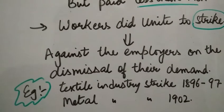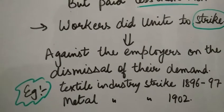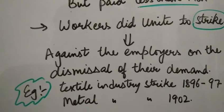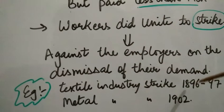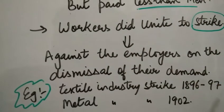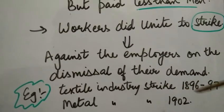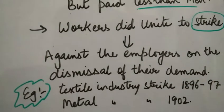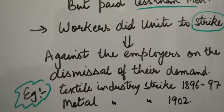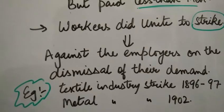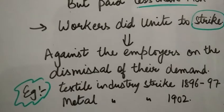Examples of major strikes in Russian society include the textile industry strike of 1896–97 and the metal industry strike of 1902. Whenever the need arose, workers came together to stand against employers and put forward their demands.